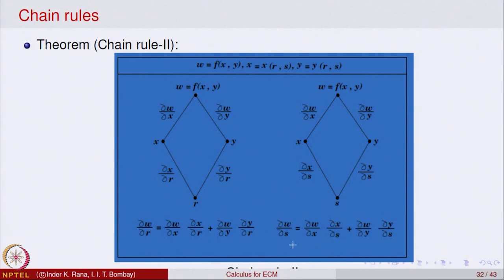So we get two partial derivatives by the chain rule. In general, depending on how many variables are involved and how they are composed, partial derivatives are obtained using chain rule formulas. The key idea is that wherever a function of more than one variable appears, each variable gives its contribution to the partial derivative. We will look at more illustrations of partial derivatives in the next lecture.